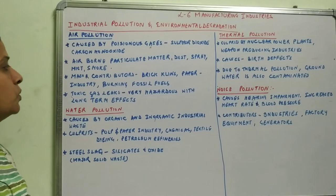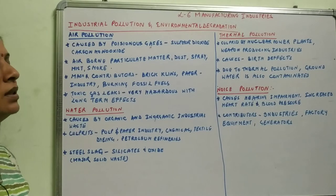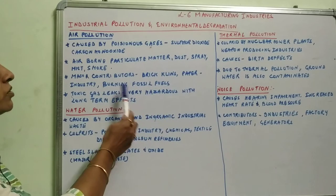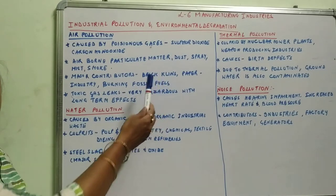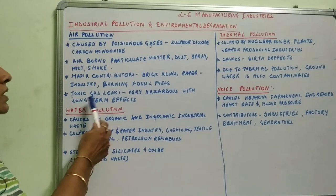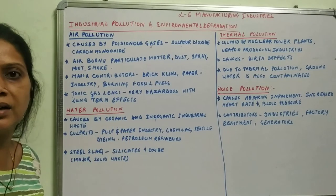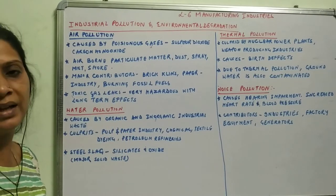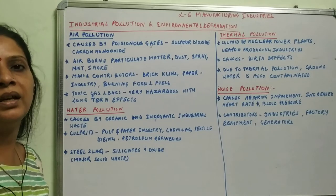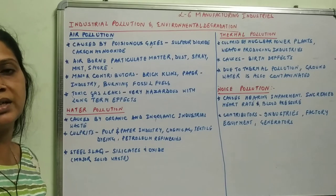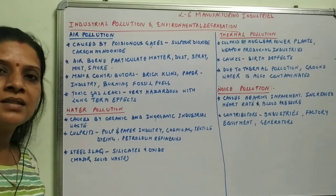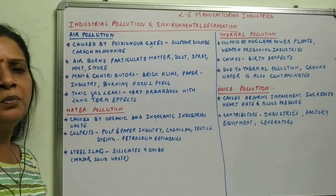Smoke also causes air pollution. Major contributors to air pollution include brick kilns, paper industry, and burning fossil fuels, which produce smoke. Toxic gas leaks have hazardous effects — for example, the Bhopal gas tragedy that occurred in 1984 killed more than 3000 people. A more recent gas tragedy occurred in India at Visakhapatnam, where styrene gas was leaked, killing a few people in the month of May.